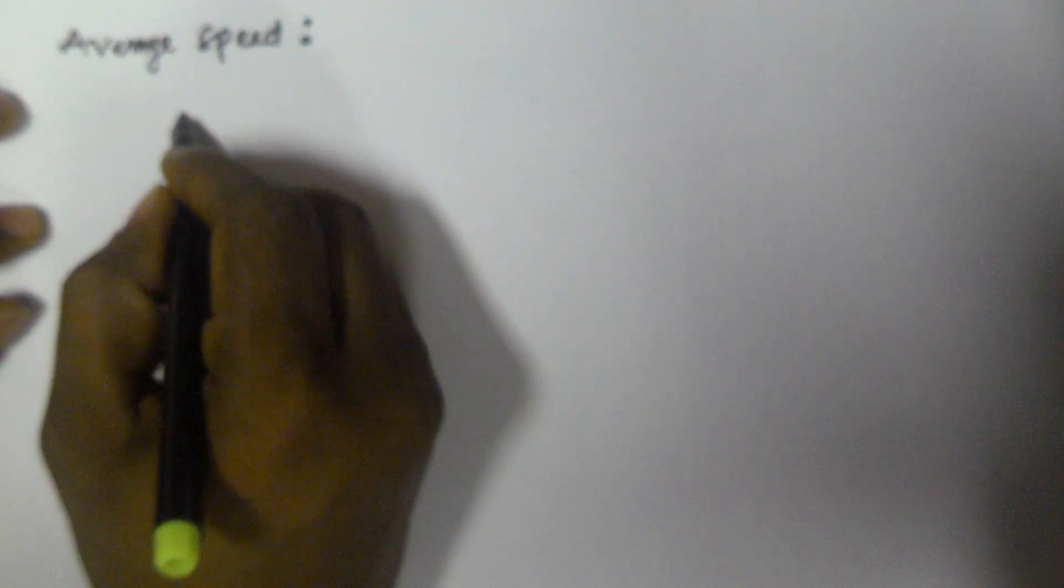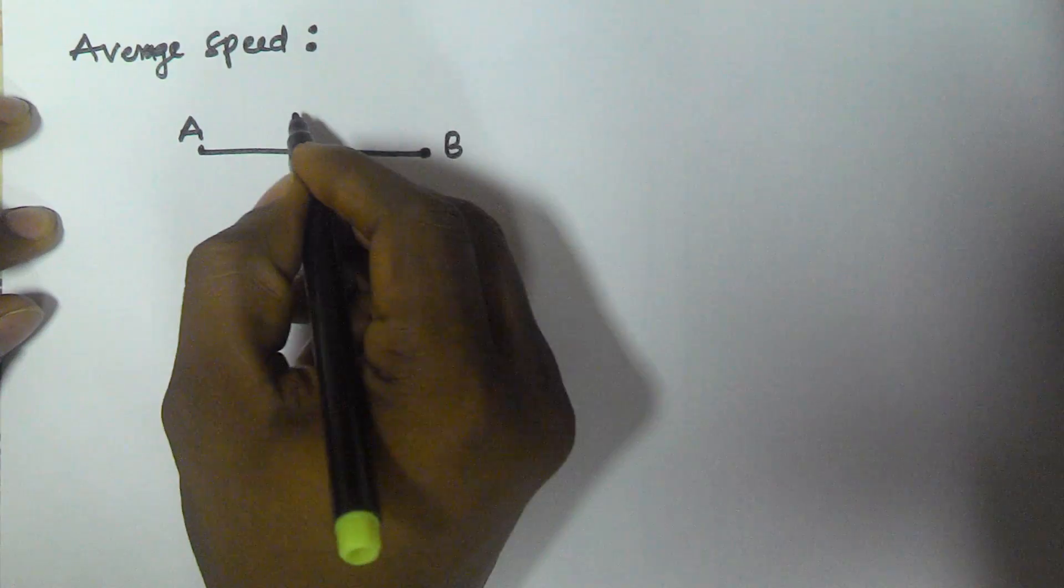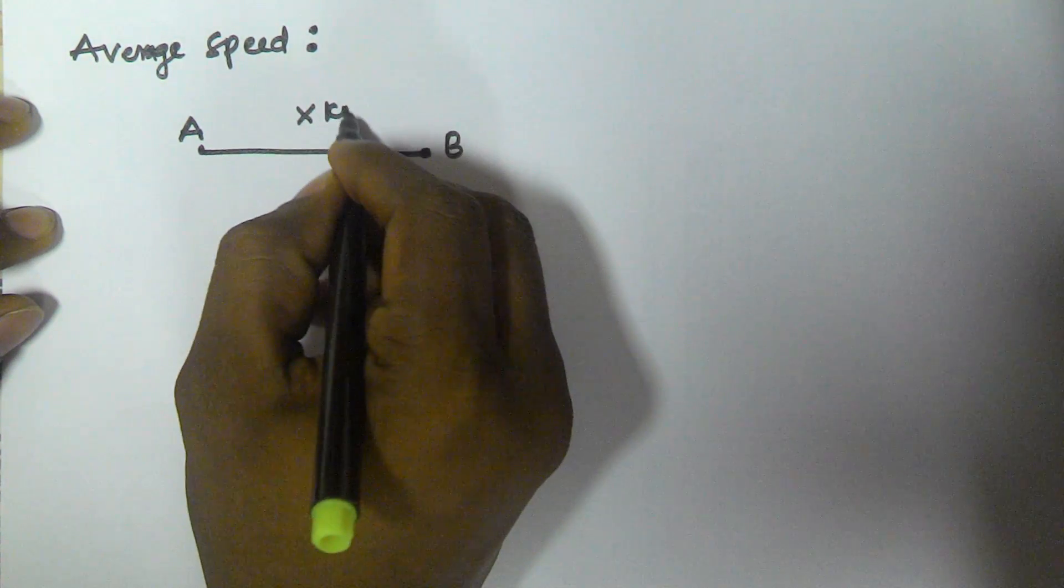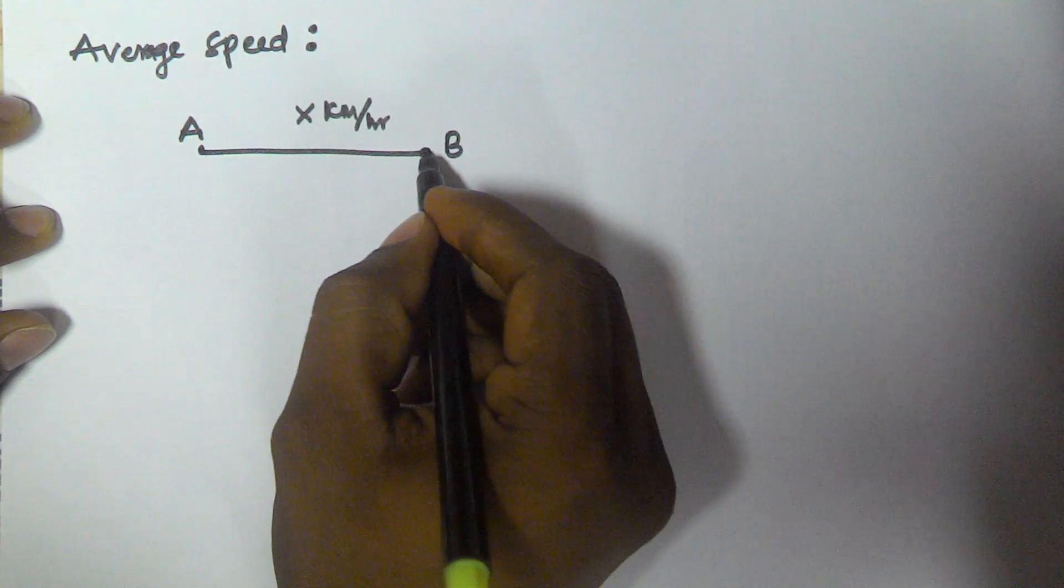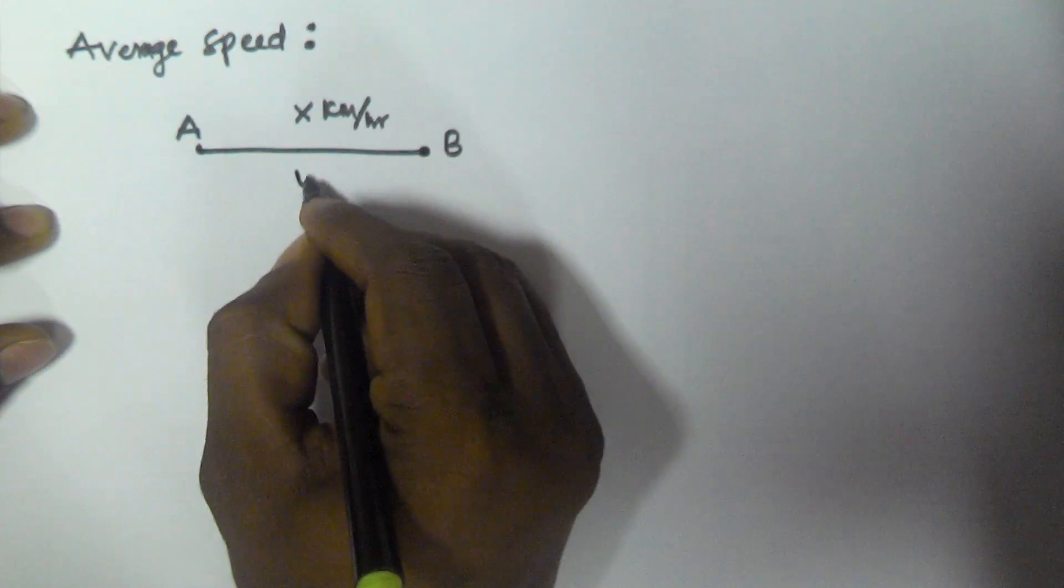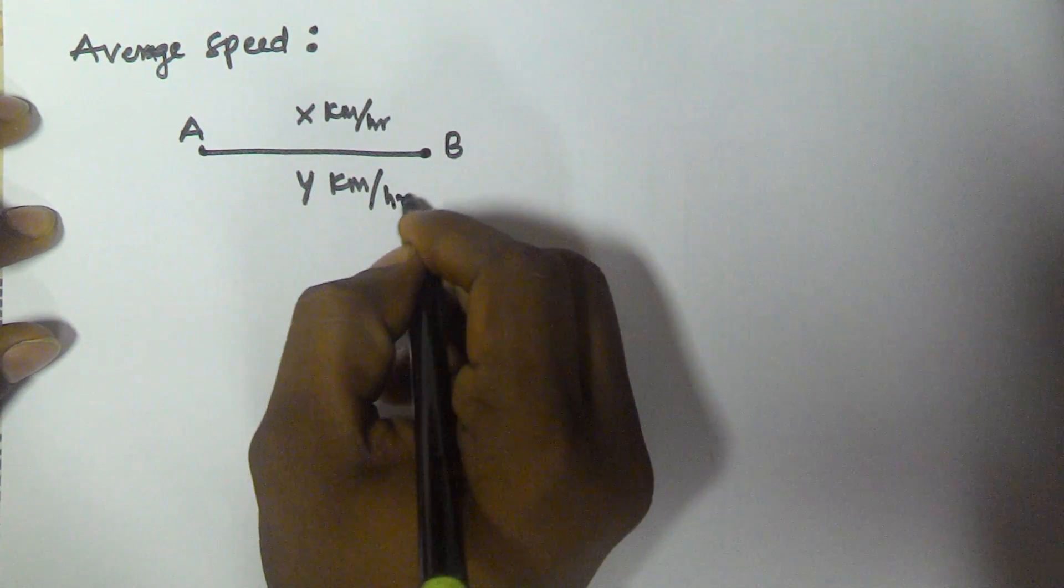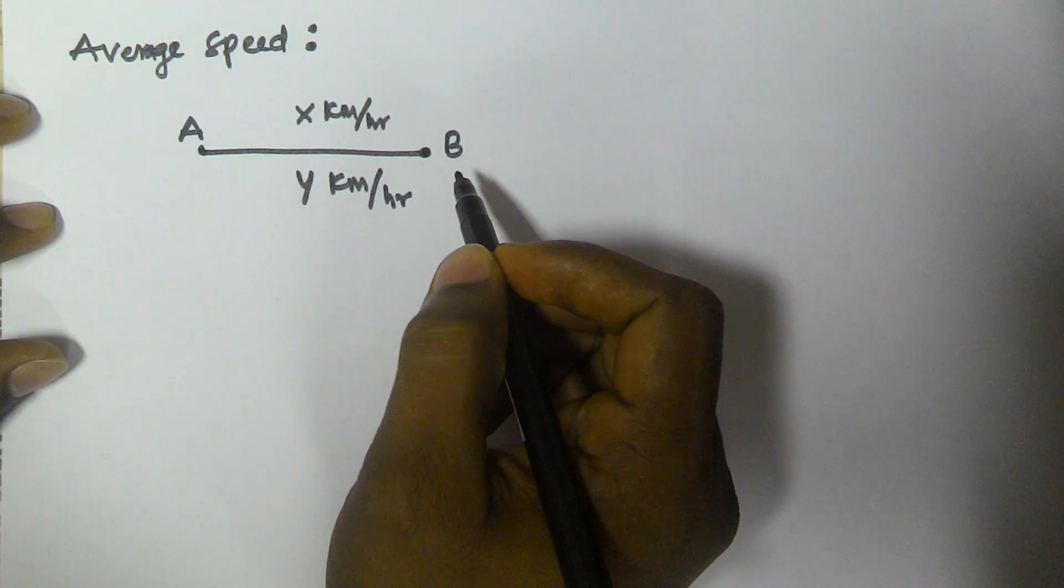So let us assume a person travelled from point A to point B with speed x km per hour and again he returned from point B to point A with speed y km per hour. So now we have to find what is average speed.